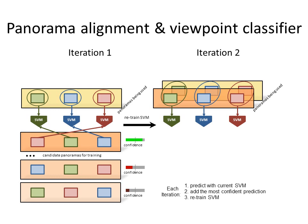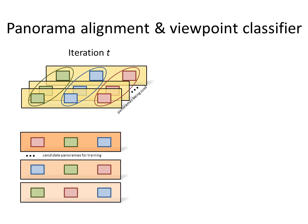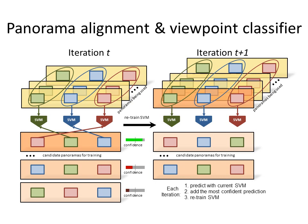In the second iteration, we retrain the SVM for viewpoint classification using the learned alignment and two training examples for each viewpoint. Again, we predict on the remaining training panoramas and calculate a confidence score for each. The panorama with the highest confidence score will be added to the SVM training set for the third iteration. So in the language of induction, at iteration t, we have already aligned t panoramas. We train a viewpoint classifier for each view using the aligned views, predict on the remaining training images, pick the most confident prediction, and add it into the training pool with a predicted alignment. We then retrain the model with t plus one panoramas. The process continues until all panoramas have been added and the final SVM is trained on the complete training set.